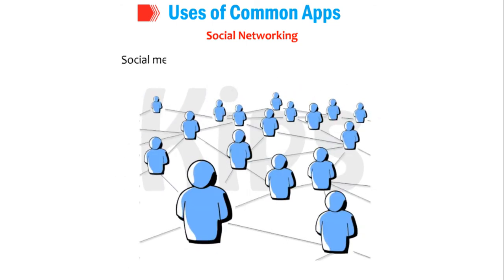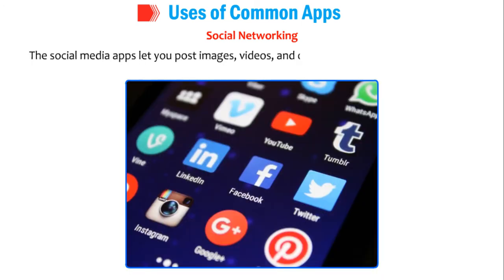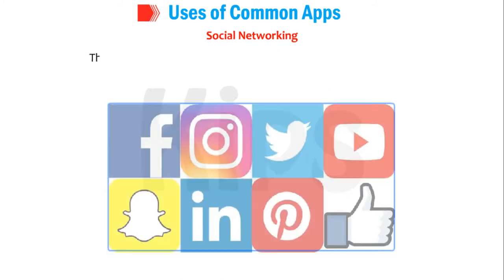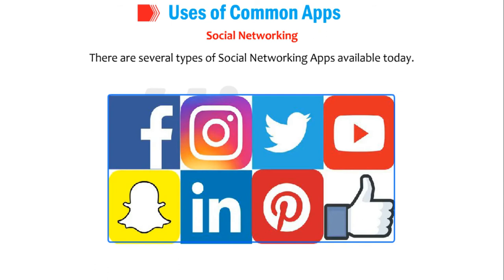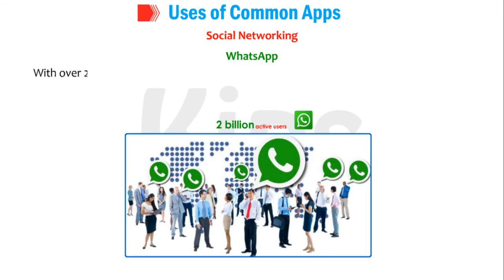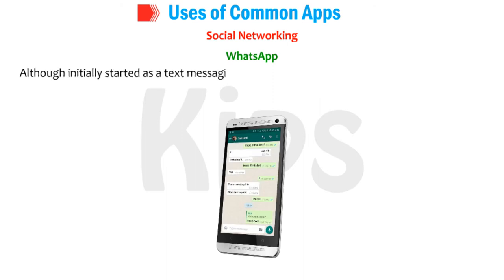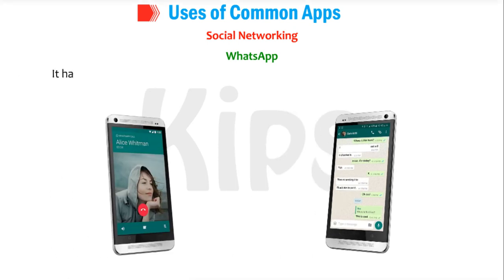Social media plays a significant role in communication. Social media apps let you post images, videos, and other updates to your profile which can be shared with anyone. You can connect with anyone across the globe easily via such apps. WhatsApp, with over 2 billion active users, is one of the most popular instant messaging apps worldwide. Although initially started as a text messaging app, WhatsApp has rapidly grown and now offers high-quality voice as well as video calling. It has a simple interface and many useful features that make it a very popular app.